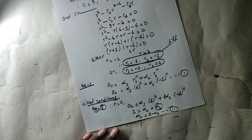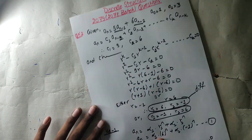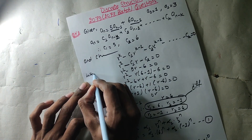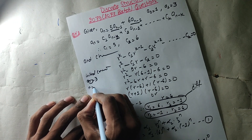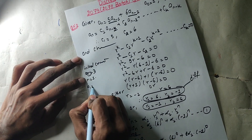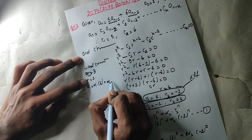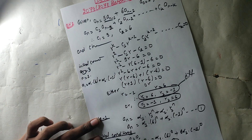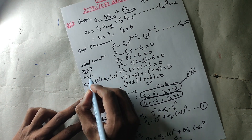Now using the second initial condition: a(1) = 3. Substituting n=1: 3 = α1·(6)^1 + α2·(−1)^1, which gives 3 = 6·α1 − α2. Substituting α2 = 1 − α1, we get 3 = 6·α1 − (1 − α1) = 7·α1 − 1.